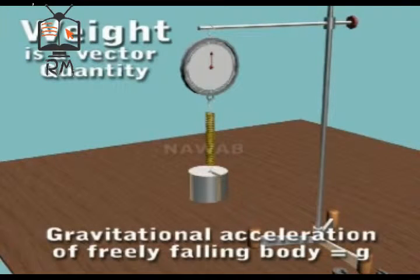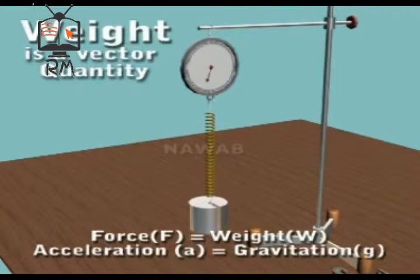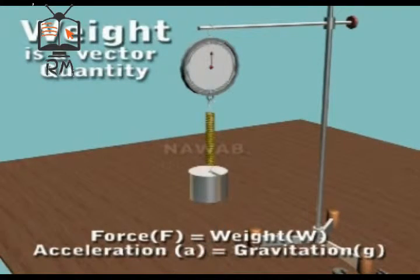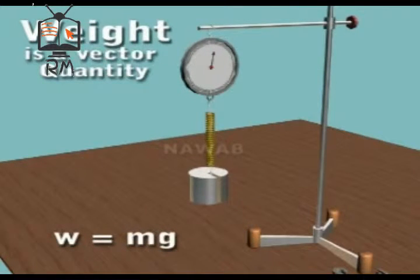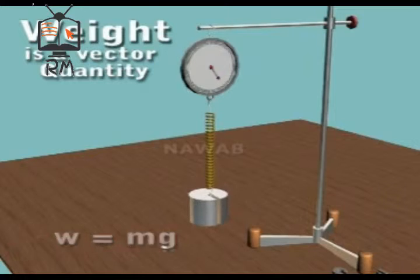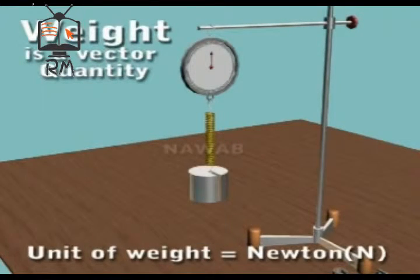As the gravitational acceleration of freely falling bodies is G, therefore we replace force F by the weight W and acceleration A by G in the equation. Then the weight of the body will be W is equal to mg. In the international system, the unit of weight is also Newton.